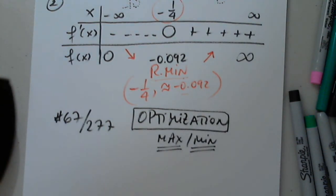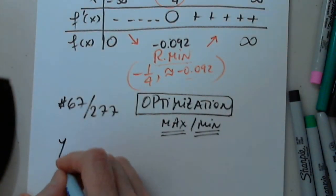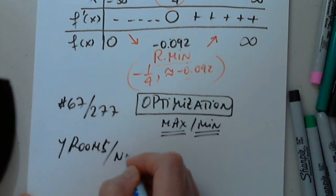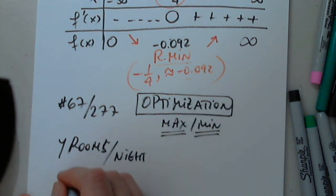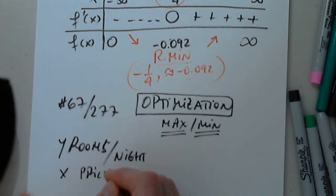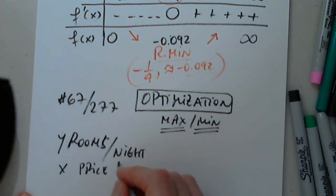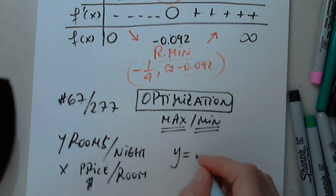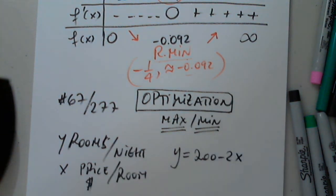A hotel owner notices that she rents y rooms per night when the price is x dollars per room. Y is rooms per night, and x is price per room in dollars. Y is given to us as 200 minus 2x.